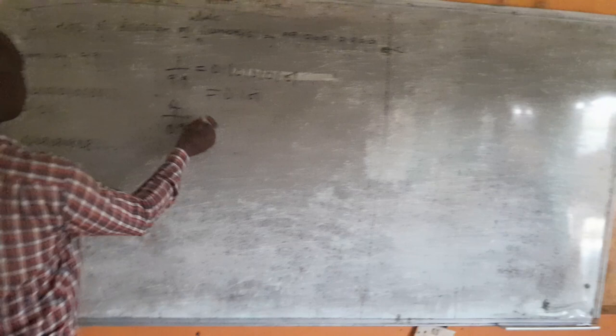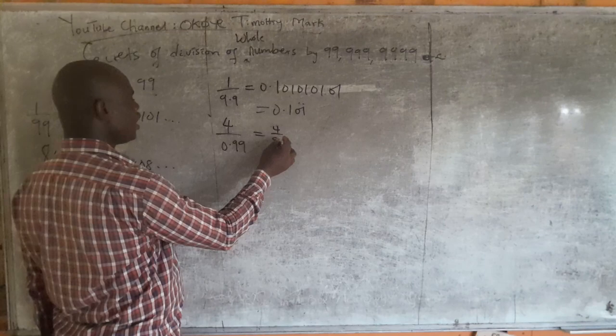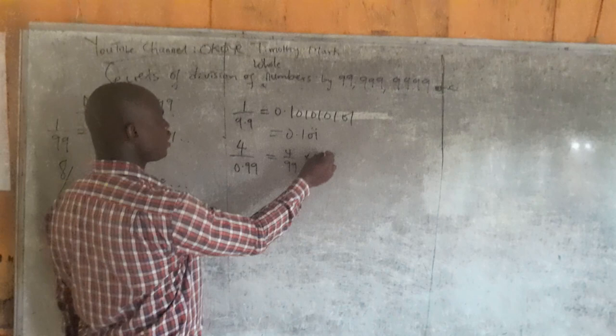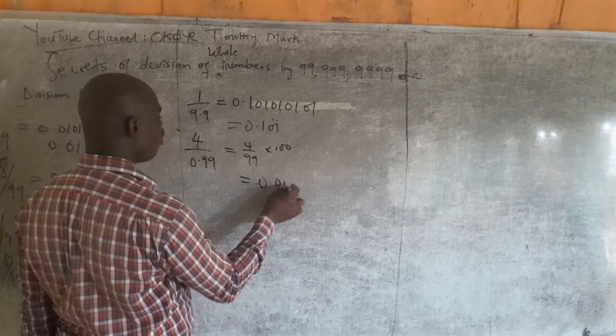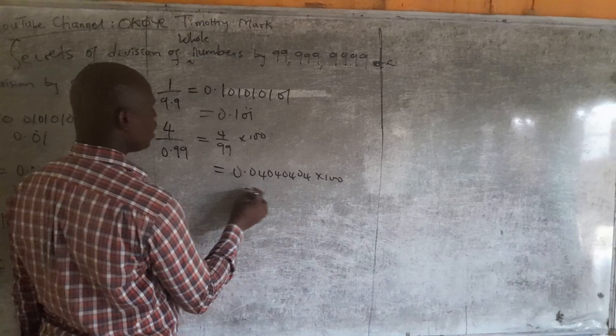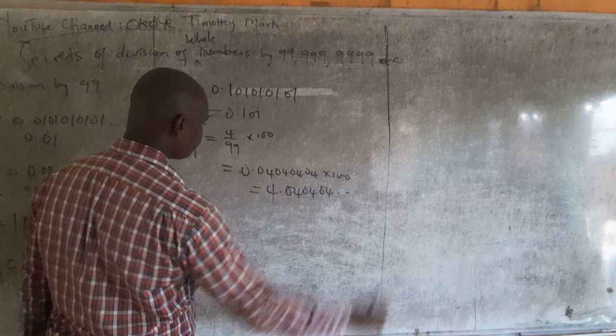So if you're given 4 over 0.99, no problem. All I need to do — I have to be smart — is to do 4 over 99 first. 0.99 is 99 over 100, so I will multiply the answer by 100. 4 over 99 is 0.0404... by what I explained, and multiplying by 100 gives you 4.0404..., and so on.